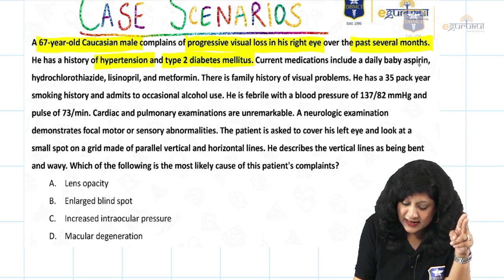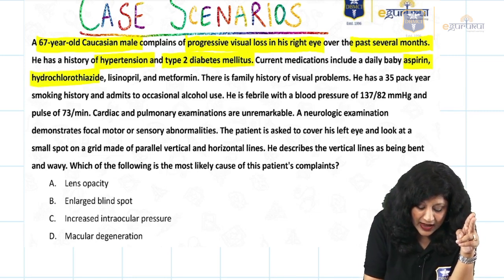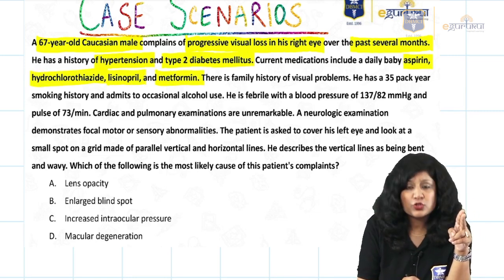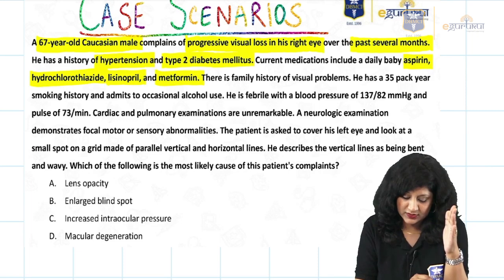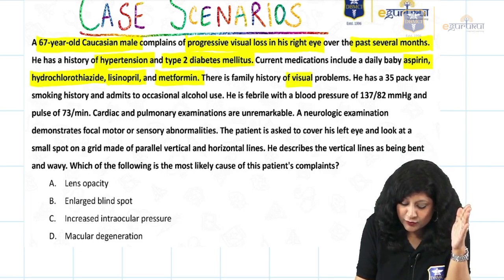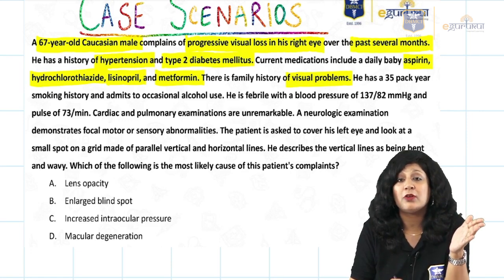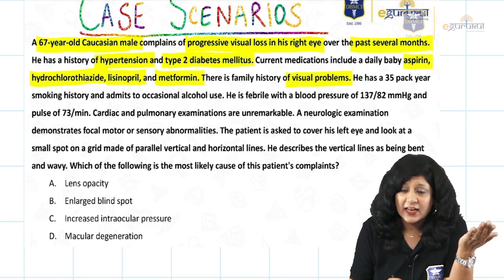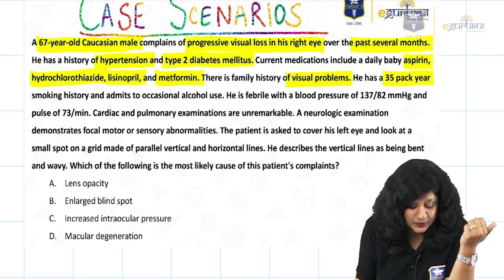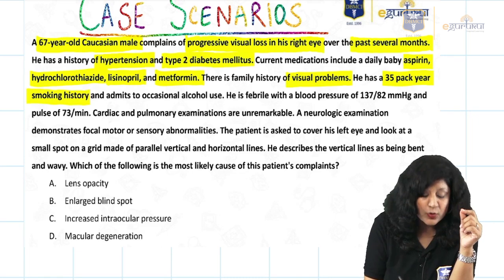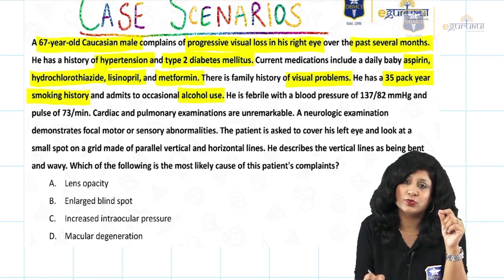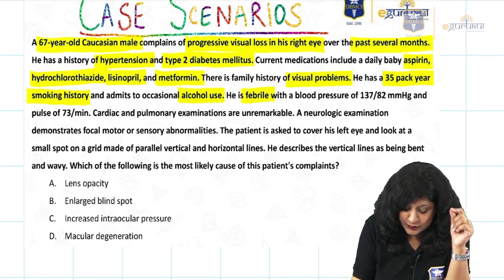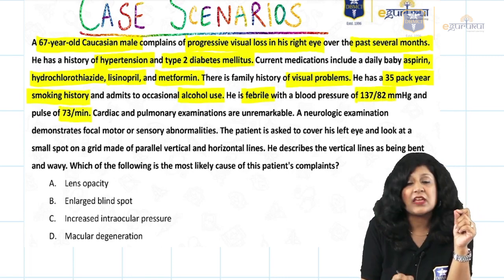Current medications include daily baby aspirin, hydrochlorothiazide, lisinopril, and metformin — so diabetes and hypertension are well controlled. There is a family history of visual problems, suggesting a genetic predisposition. He has a 35-year smoking history, which is very important, and admits to occasional alcohol use. Vitals: BP 137/82, pulse 73 per minute.